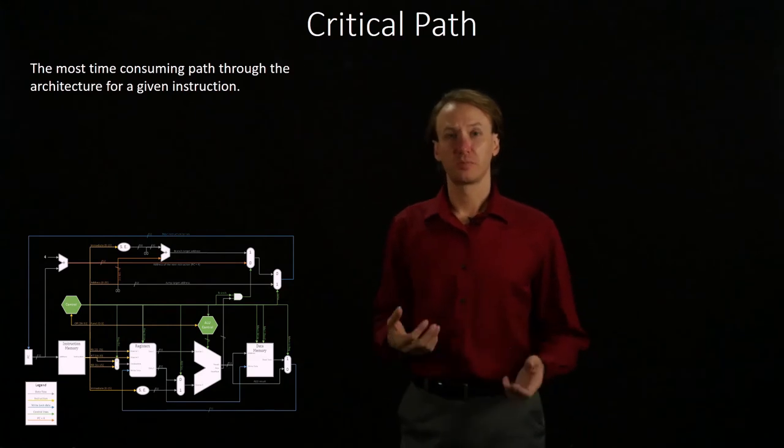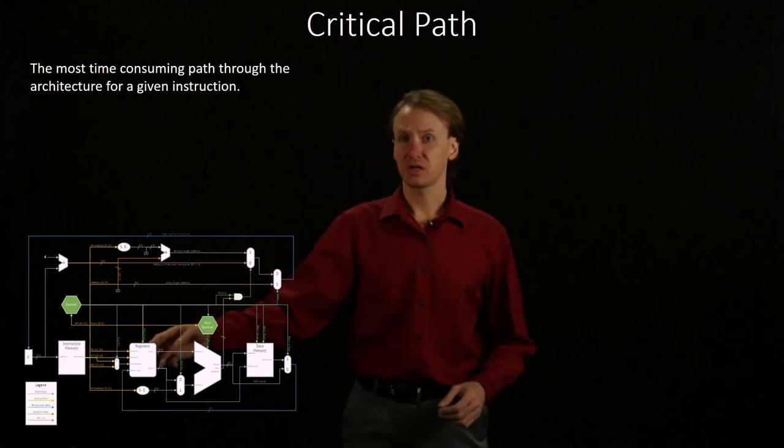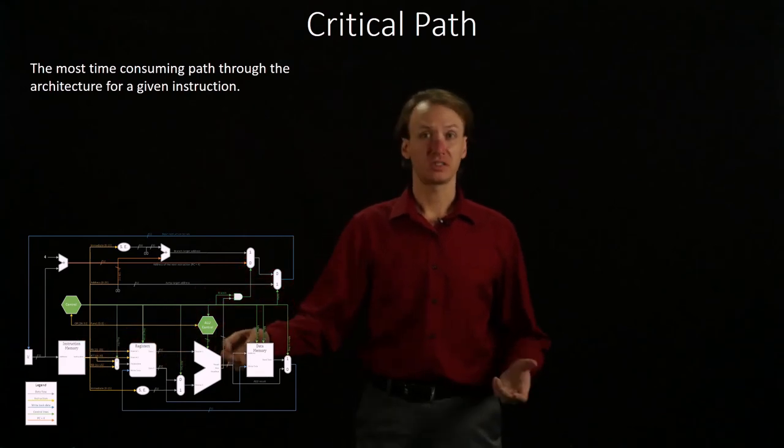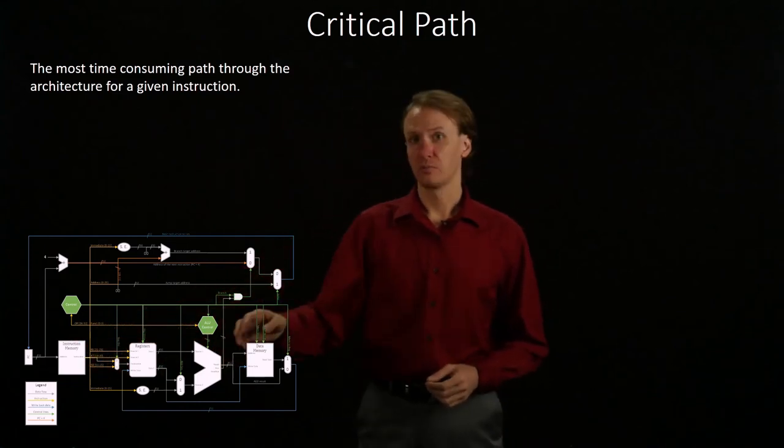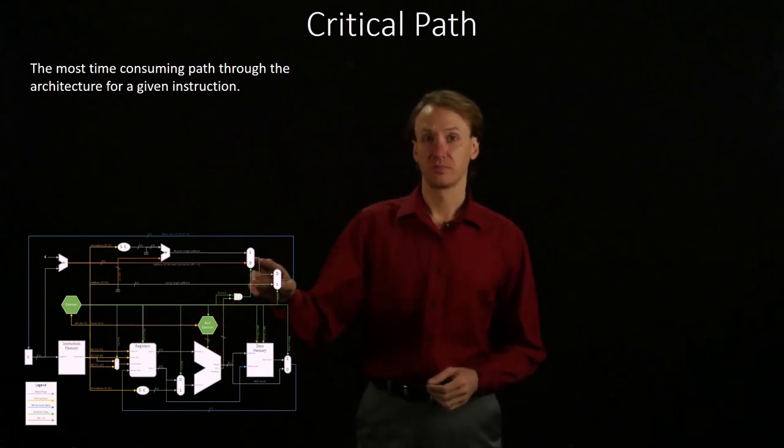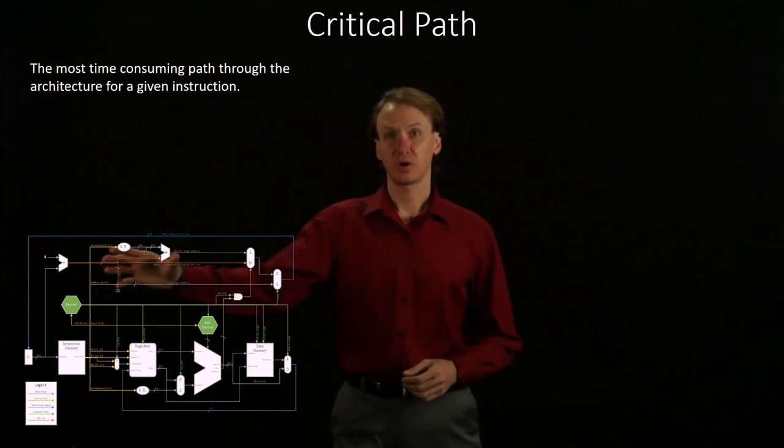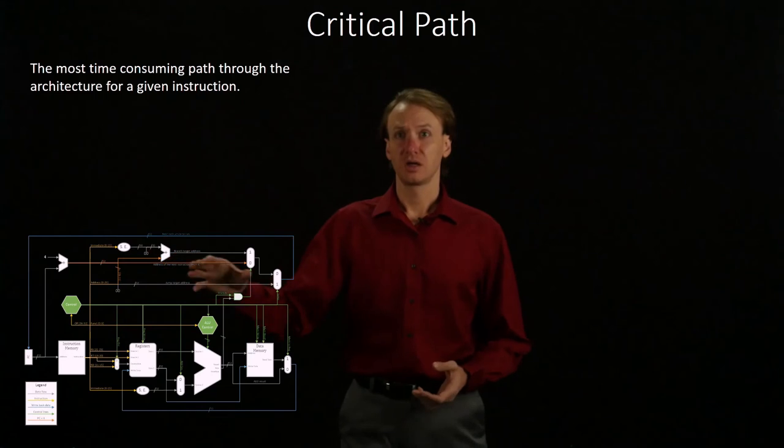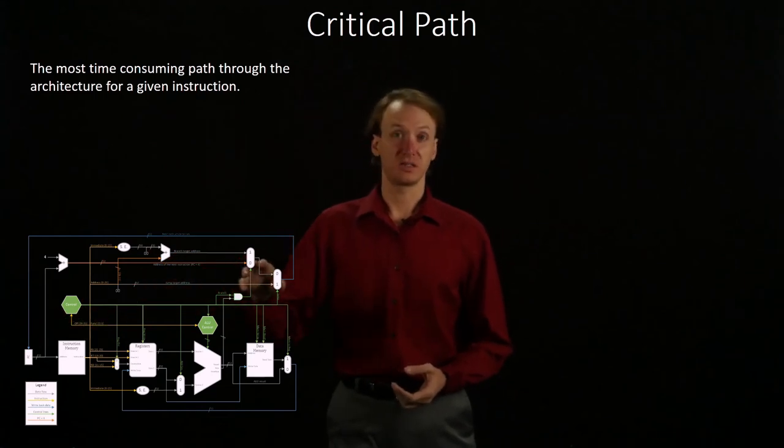Turns out this will be more relevant when we have a branch instruction because the branch instruction has to determine if the contents of two registers are the same. So, it has to go through the main ALU workflow before it can set this multiplexer. That means that while this hardware may not take very long, actually updating the program counter will have to wait until we can set this multiplexer.